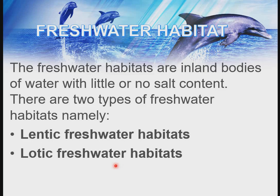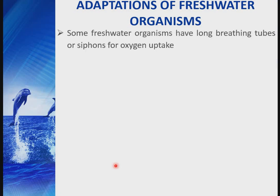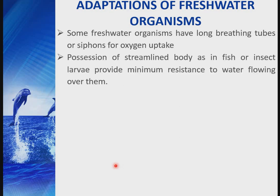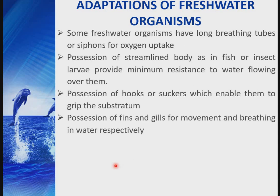Adaptations of freshwater organisms: some have long breathing tubes called siphons for oxygen uptake — for example, mosquito larvae and pupae. They also have streamlined bodies, as in fish or insect larvae, to provide minimal resistance to flowing water. Some possess hooks or suckers which enable them to grip the substrate. They also have fins and gills for movement and breathing in water respectively.